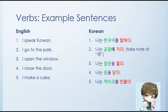Let's have some example sentences. First: 'I speak Korean' — identify the subject (I), object (Korean), and verb (speak). In Korean, S-O-V order: nanun, hanggugurul, malada. Next: 'I go to the park' — nanun, kongwune, kada. Note the e particle because park is a location, not an object — this is an intransitive verb. Third: 'I open the window' — nanun, shang munul, yolda. Fourth: 'I close the door' — nanun, munul, tatda. And last: 'I make a cake' — nanun, keikul, mandulda.